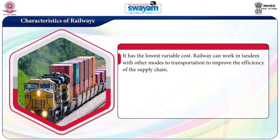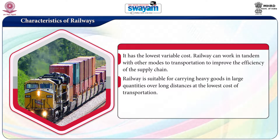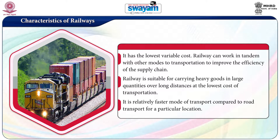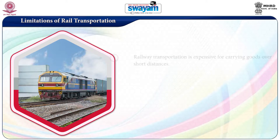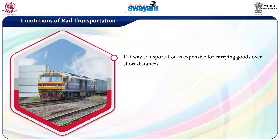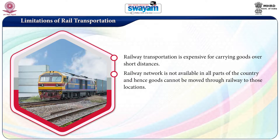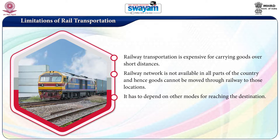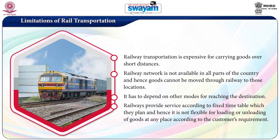Railways can work in tandem with other modes of transportation to improve the efficiency of the supply chain. Railways is suitable for carrying heavy goods in large quantities over long distances at the lowest cost of transportation. It is a relatively faster mode of transport compared to road transport for a particular location. Limitations of rail transportation: railway transportation is expensive for carrying goods over short distances. Railway network is not available in all parts of the country and hence goods cannot be moved through railways to those locations — it has to depend on other modes for reaching the destination. Railways provide service according to a fixed timetable and hence it is not flexible for loading and unloading of goods at any place according to the customer's requirement.